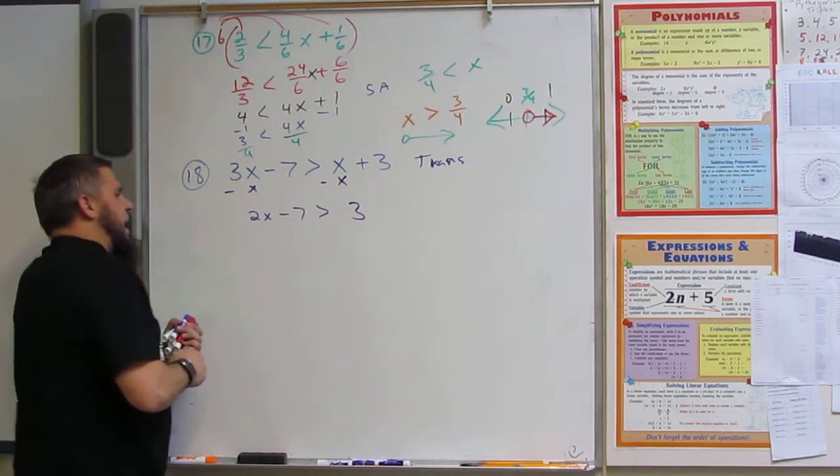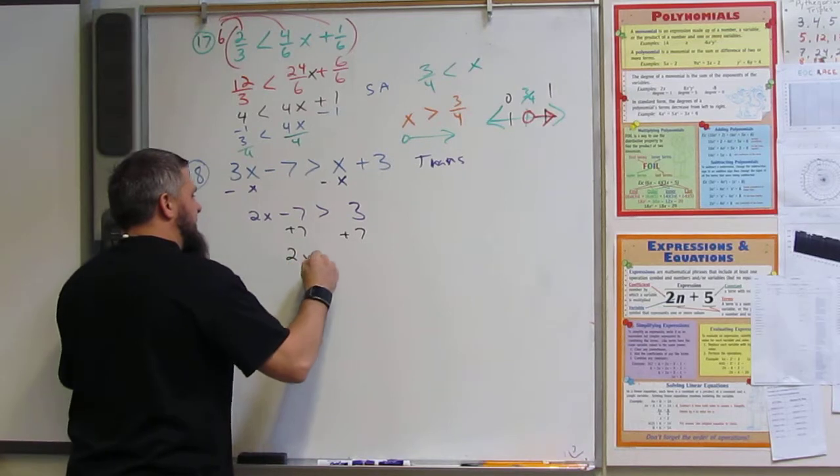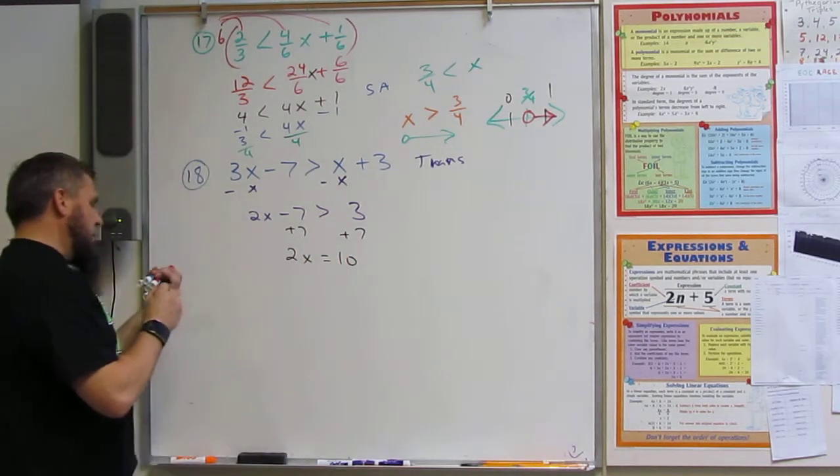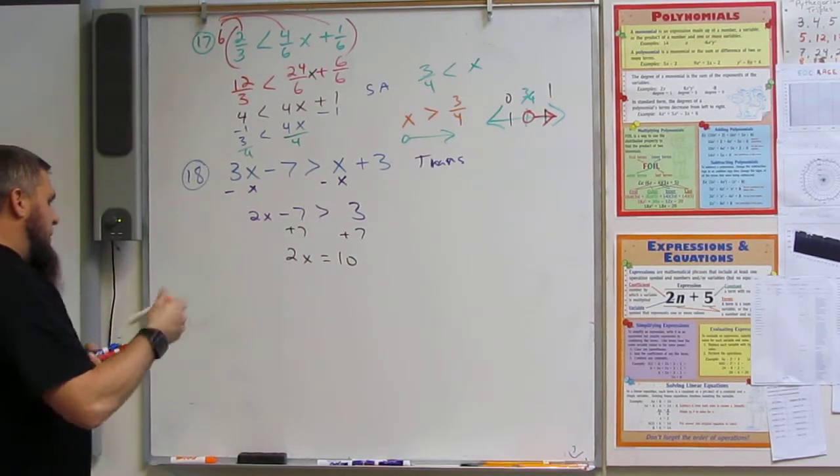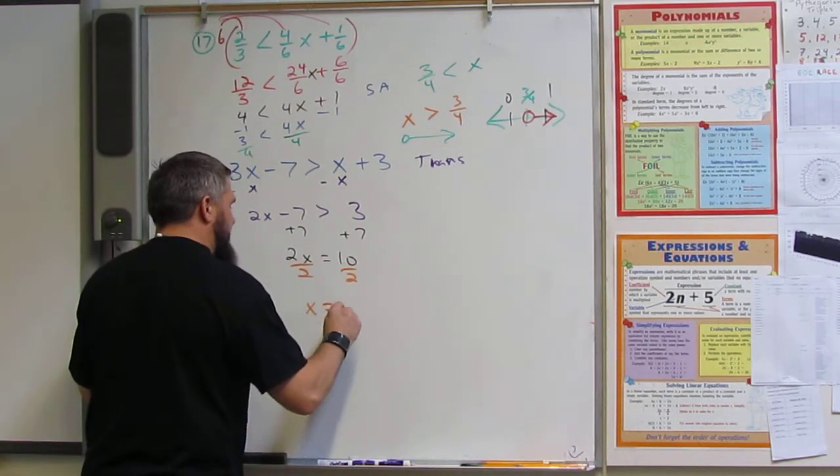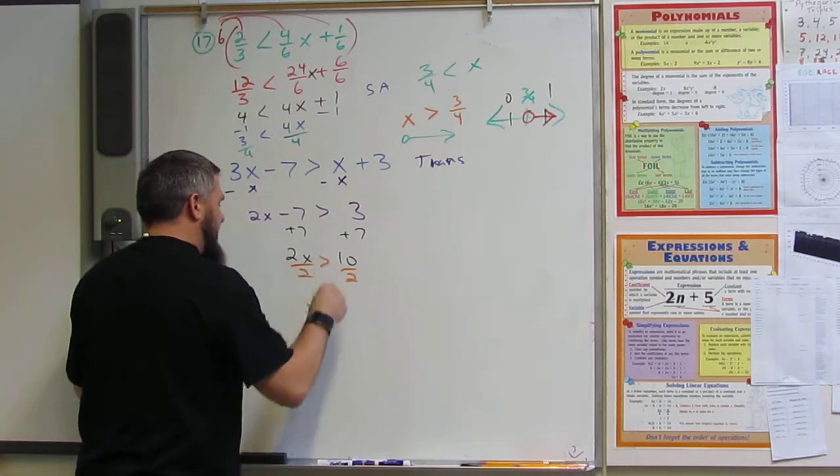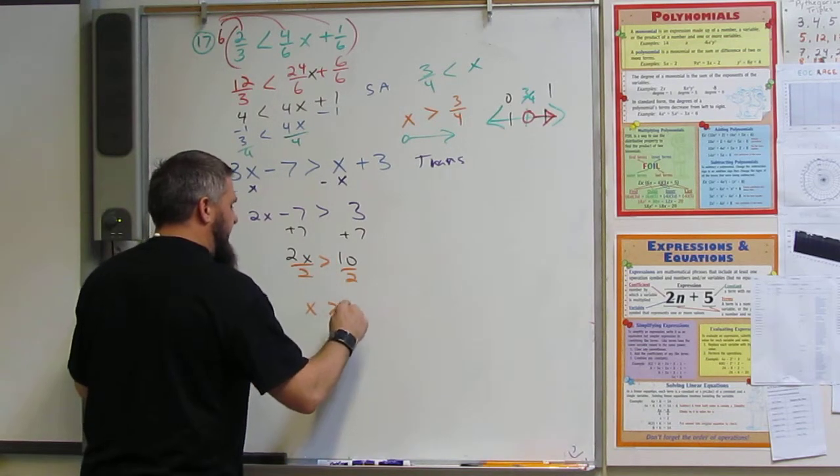So now I'm going to add 7 and add 7, and I get 2x is equal to 10. And I'm going to divide by 2, divide by 2, and I get x is equal to, or not equal, sorry about that, is greater than. So x is greater than 5.